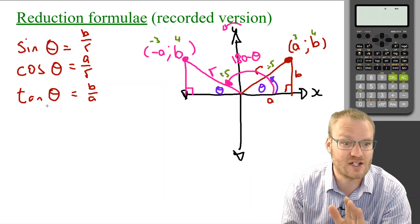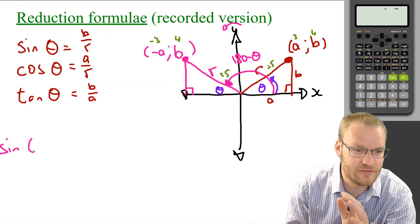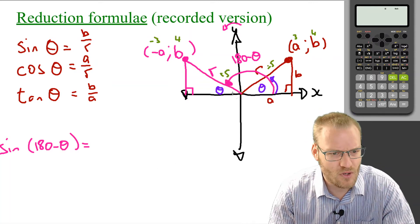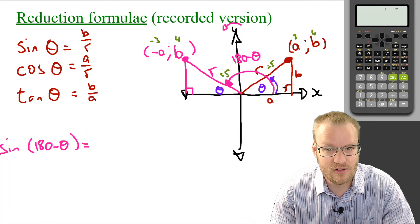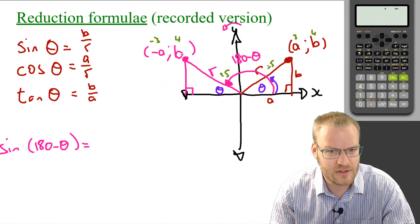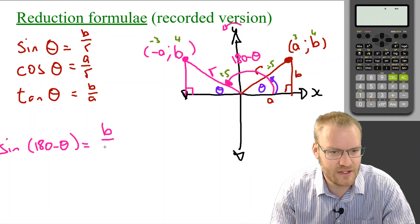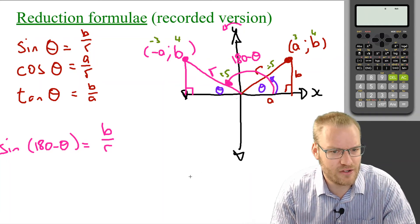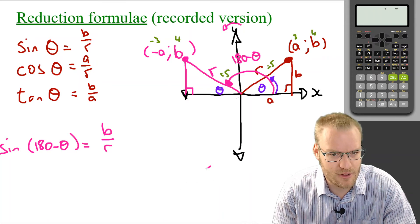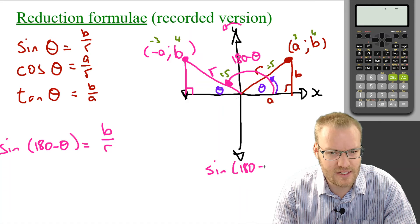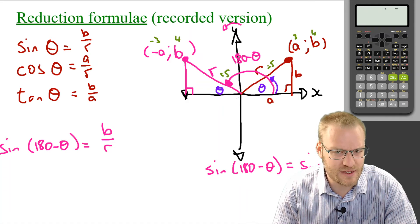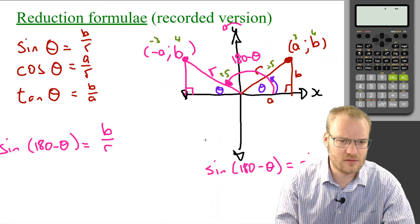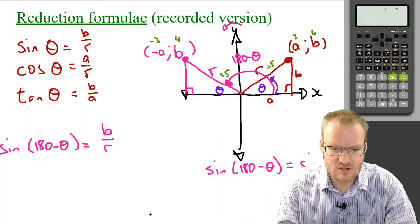And now what we're interested in, this is the reduction formulae. Sine of 180 minus theta, what is that equal to? Well, what is sine? Sine is y over r. So, the y value is b, so it's the y value b over r. Have a look at that. That looks the same as sine theta. So, in other words, our first trig ratio is just saying our first reduction I'm going to put here is sine 180 minus theta. Isn't that just the same as sine theta? So, if sine theta is b over r and sine 180 minus theta is b over r, well, they're the same thing. b over r, b over r.